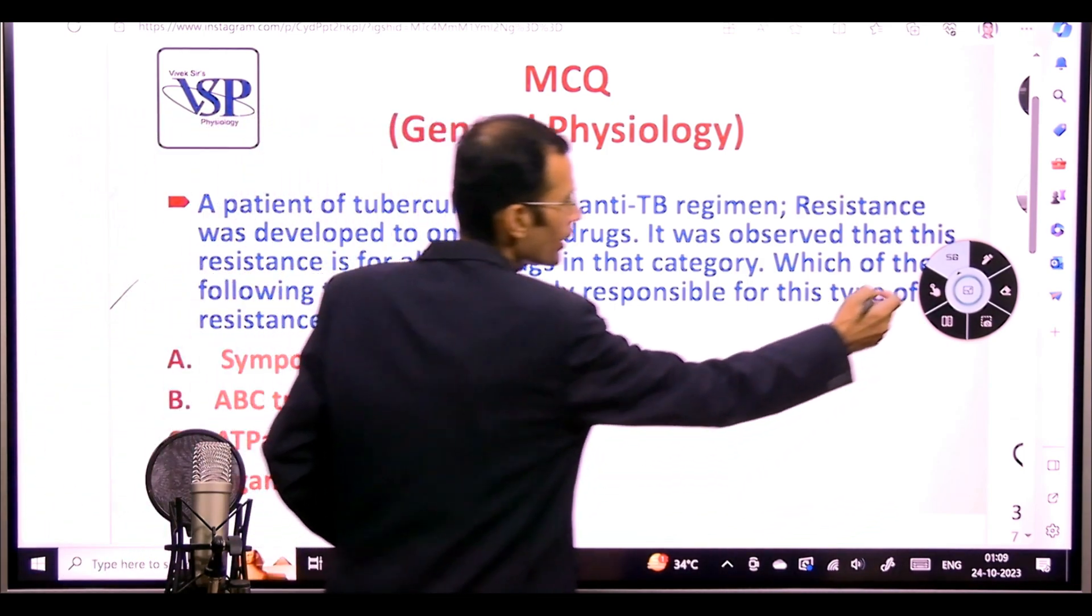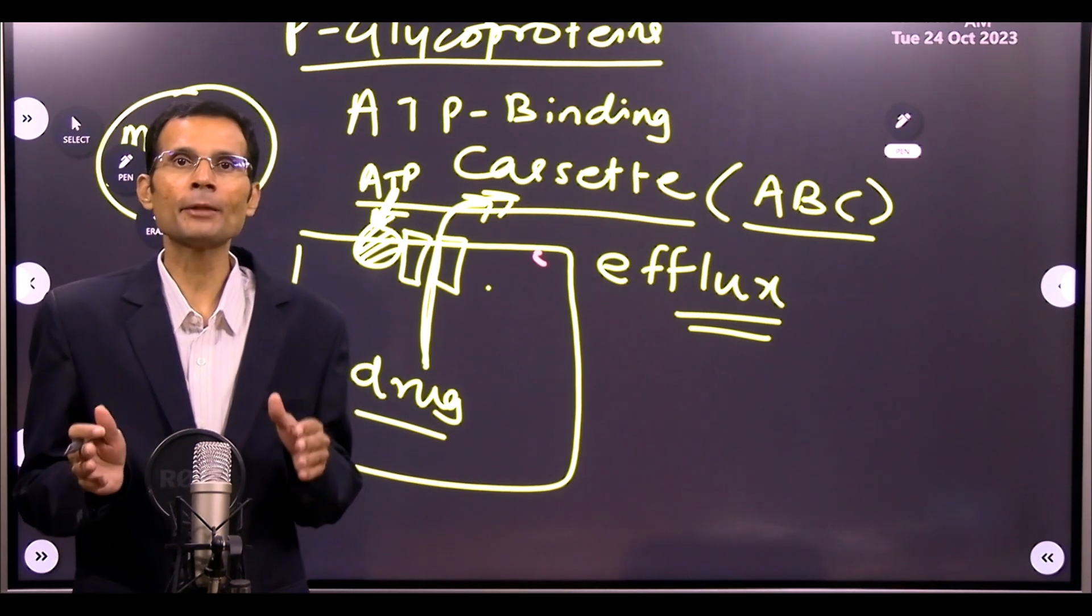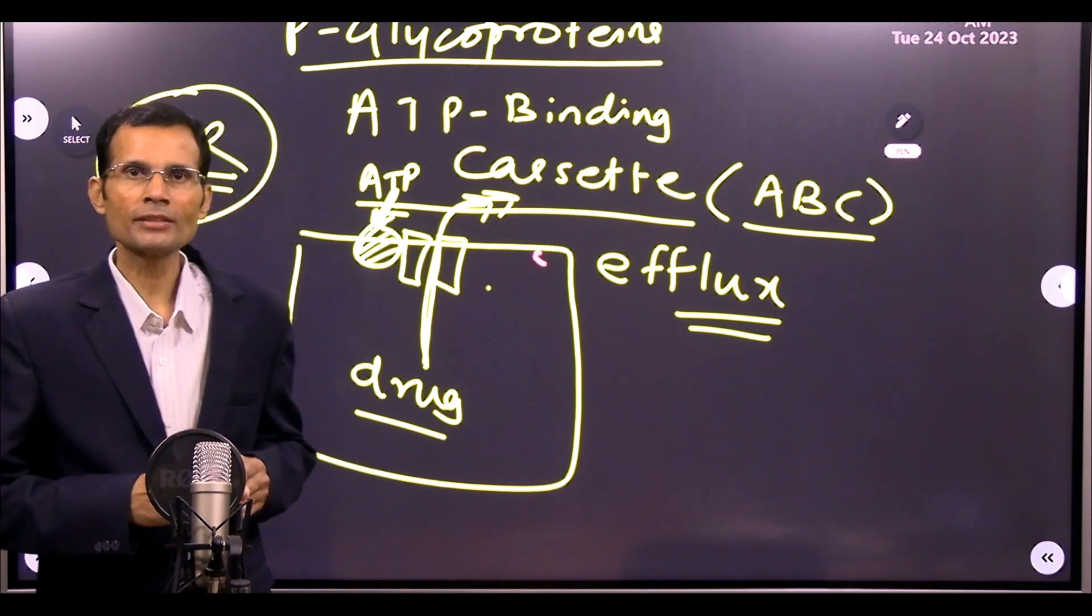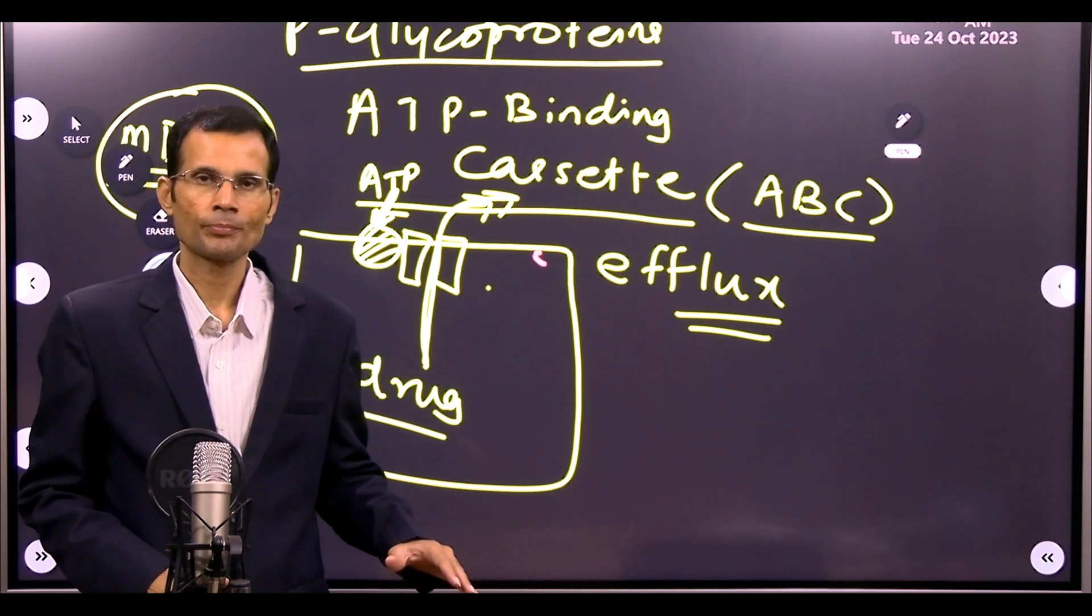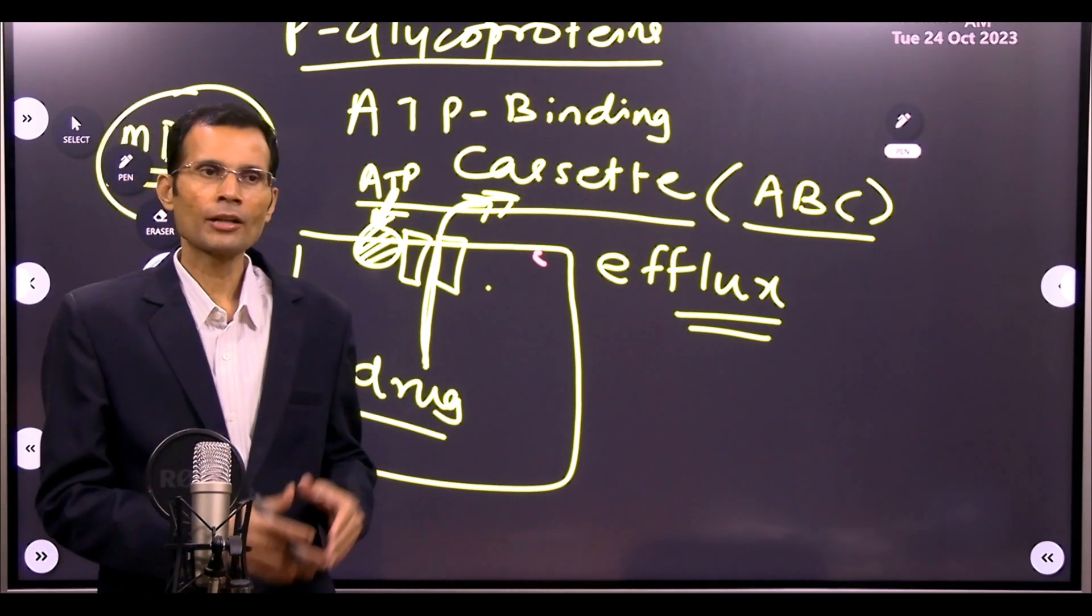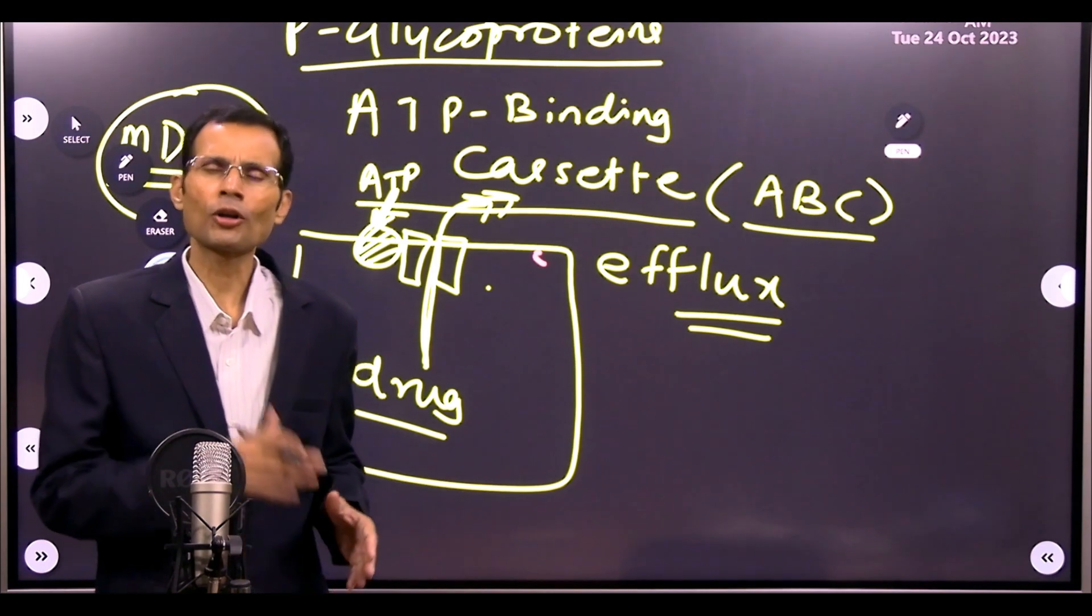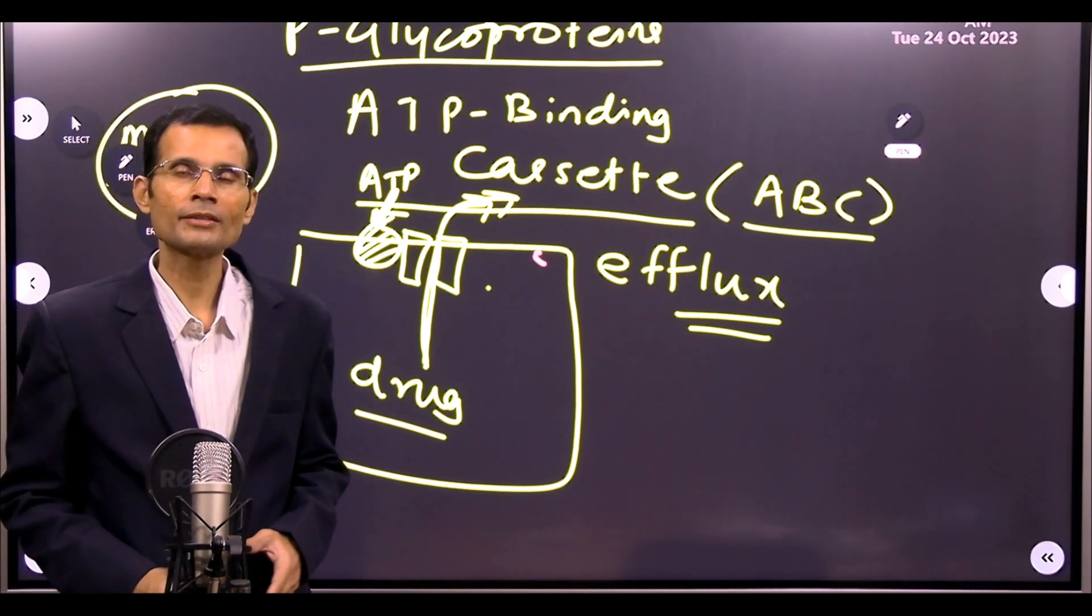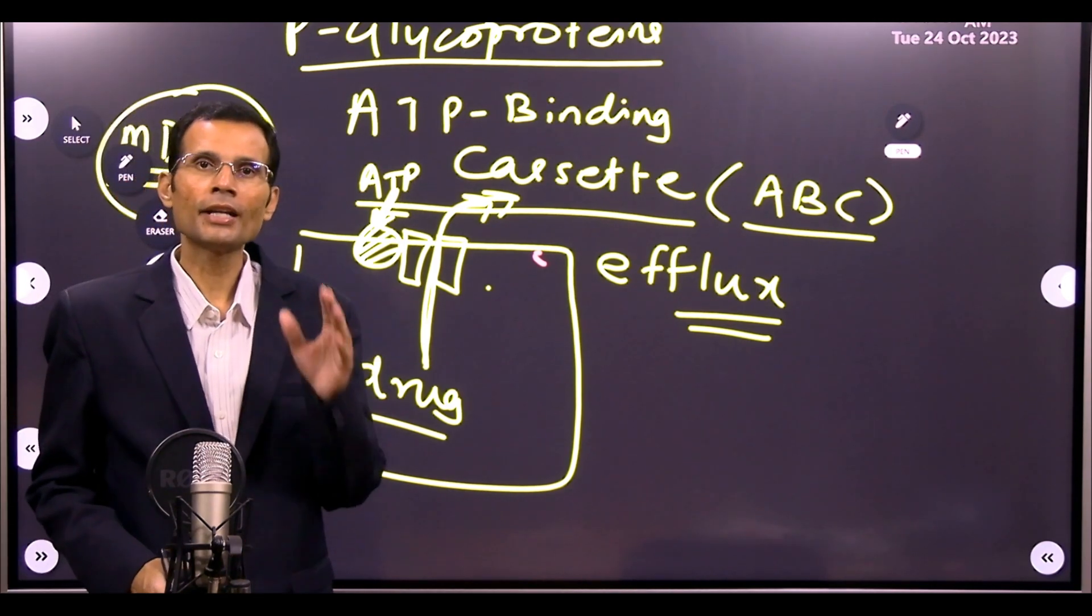First thing to be clearly understood is that they are different from ATPases. ATPases or pumps are primary active transporters like sodium potassium pump or H+ K+ ATPase. They are normally expressed, normally present in all cell membranes or certain cell membranes.